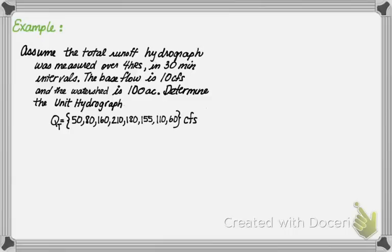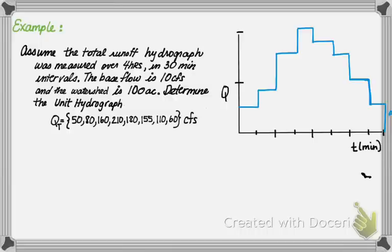Let's do an example to illustrate how to use proportionality. Assume the total runoff hydrograph was measured over 4 hours in 30 minute intervals. The base flow is 10 CFS and the watershed is 100 acres. Determine the unit hydrograph. You are given a total runoff hydrograph as shown, where it's a step function in 30 minute intervals over a 4 hour period.